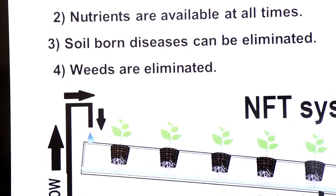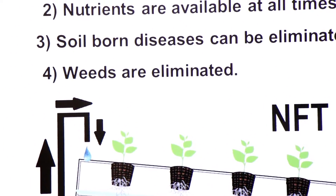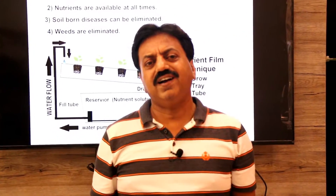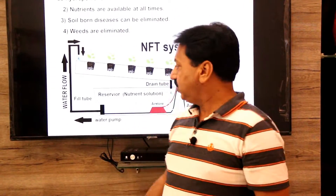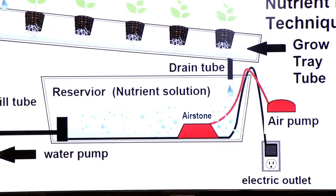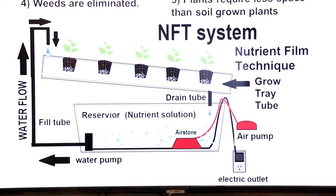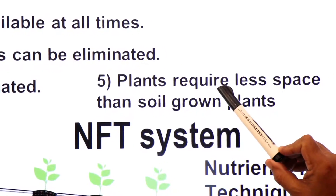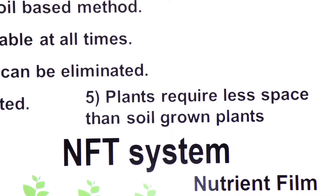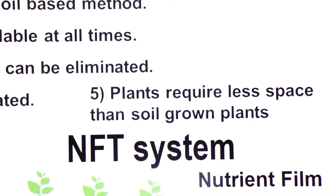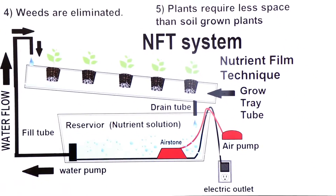Number four — weeds are eliminated. A weed is an undesirable plant — you can also call it grass. There is no chance of weeds appearing in hydroponics. Also, less space is used. Number five — plants require less space than soil-grown plants. These are all the advantages of hydroponics.